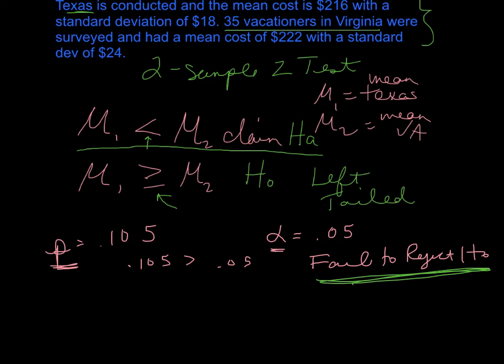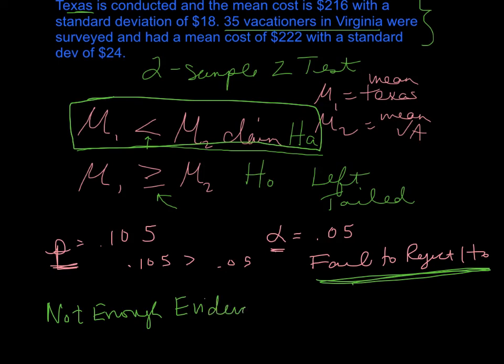Now we go to the last thing, which is our final decision about the claim. We have failed to reject the null. Our claim was an Hₐ, our claim was an alternative. So our final decision is that there was not enough evidence - you're just reading straight from your notes there - not enough evidence to, in this case because our claim was an Hₐ, an alternative, we say not enough evidence to support the claim.